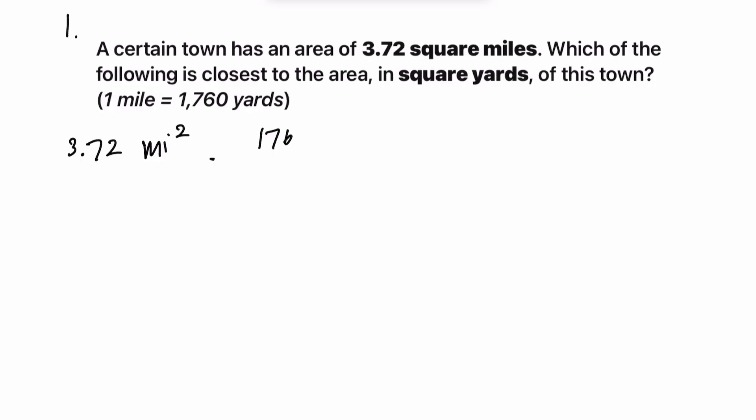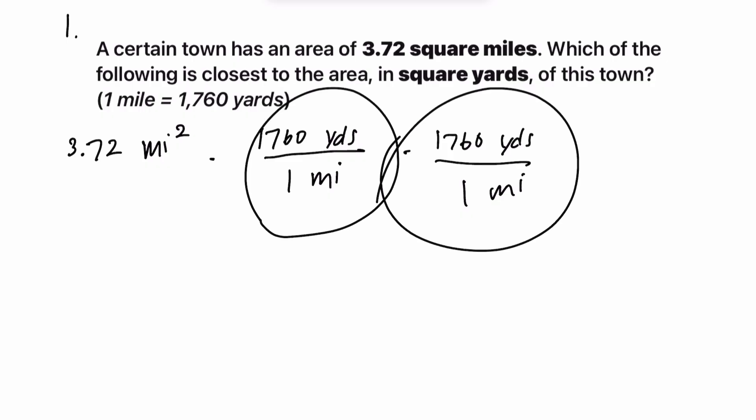Here's what I mean by that. If we multiply by 1760 yards over 1 mile times 1760 yards over 1 mile, what you'll notice is that these two fractions are equal to each other. I mean, they're 1 over 1. Because 1760 yards is equal to 1 mile, so the numerator and denominator are the exact same.